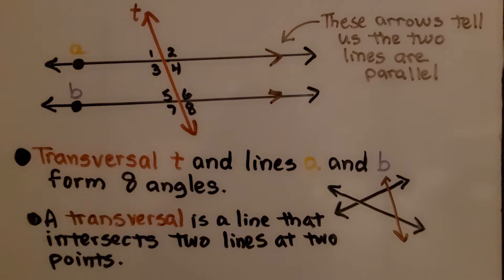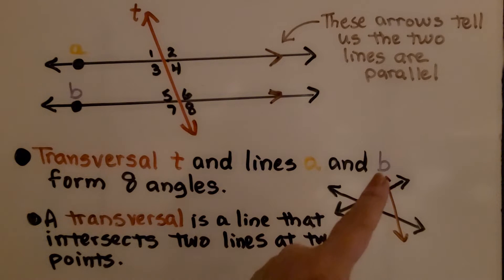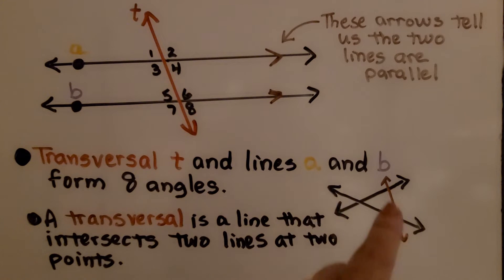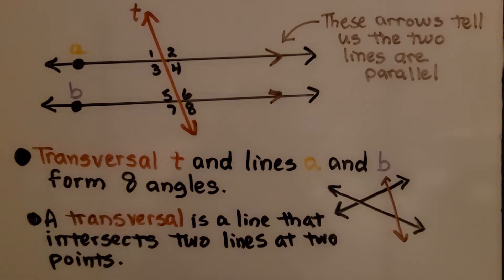Keep in mind that a transversal is a line that intersects two lines at two points. So this line is intersecting these two lines at two points — and these lines aren't parallel, but it's still a transversal. The definition didn't say they had to be parallel; it's just two lines.